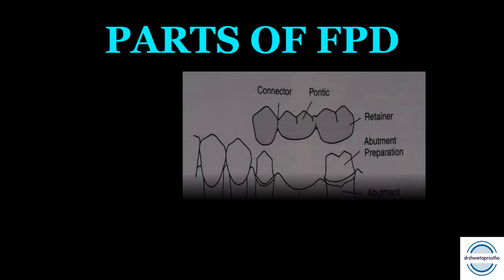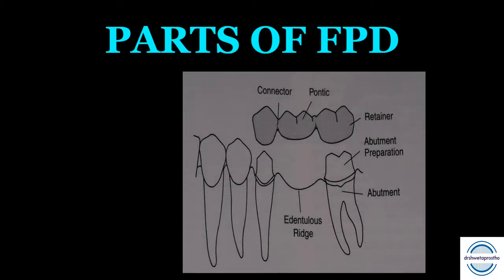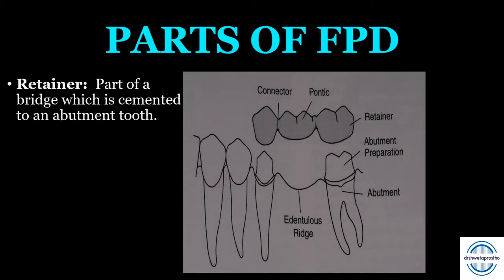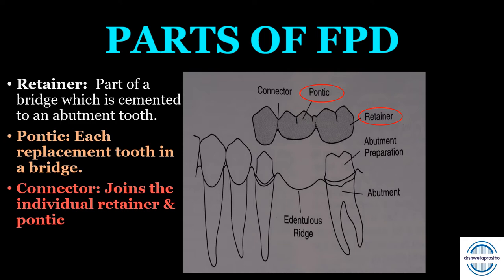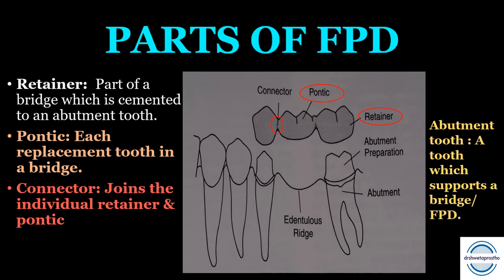Let us understand the parts of the FPD. There are three parts: first is the retainer, which is a part of the bridge cemented to the abutment tooth; second is the pontic, that is the replacement tooth in the bridge; and third is the connector, which joins the individual retainer and the pontic. The abutment is not a part of the FPD — it is the tooth which supports the bridge.